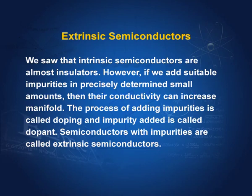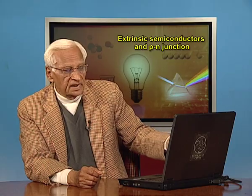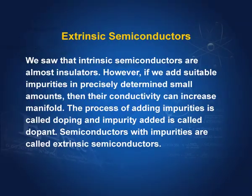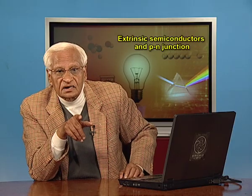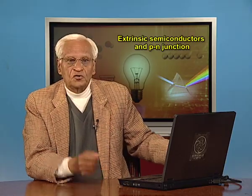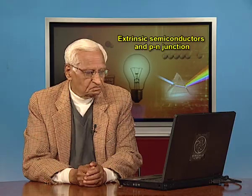However, if we add suitable impurities in precisely determined small amounts — mark these words, precisely determined small amounts — we determine precisely how much impurity is to be added. And if we do that, then their conductivity can increase many fold. The process of adding impurities is called doping and the impurity added is called dopant. Semiconductors with impurities are called extrinsic semi-conductors.